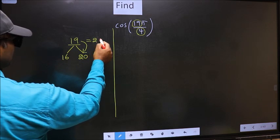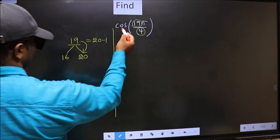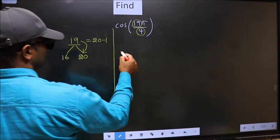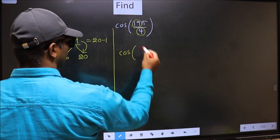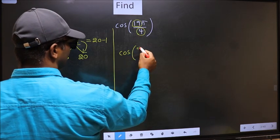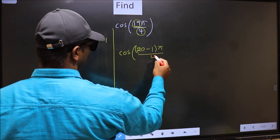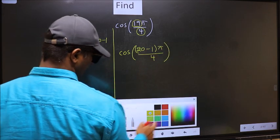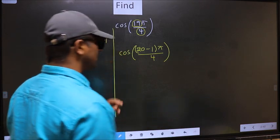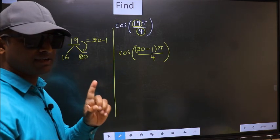So 19 should be written as 20 minus 1. So this will become cos, in place of 19 now you write 20 minus 1, π by 4. This is your step 1.